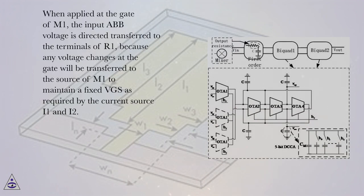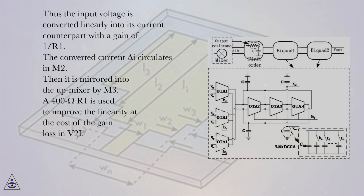When applied at the gate of M1, the input ABB voltage is directly transferred to the terminals of R1, because any voltage changes at the gate will be transferred to the source of M1 to maintain a fixed VGS as required by the current sources I1 and I2. Thus the input voltage is converted linearly into its current counterpart with a gain of 1/R1. The converted current circulates in M2.